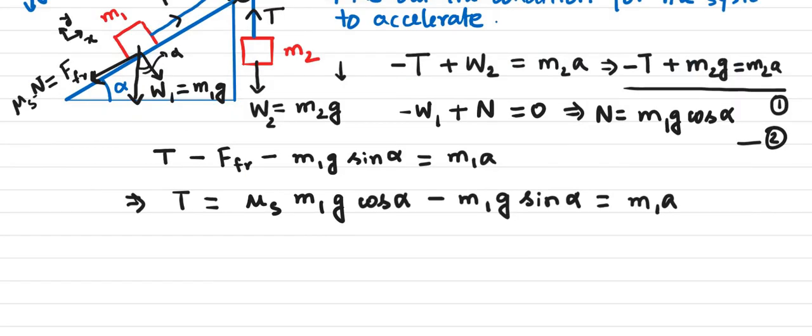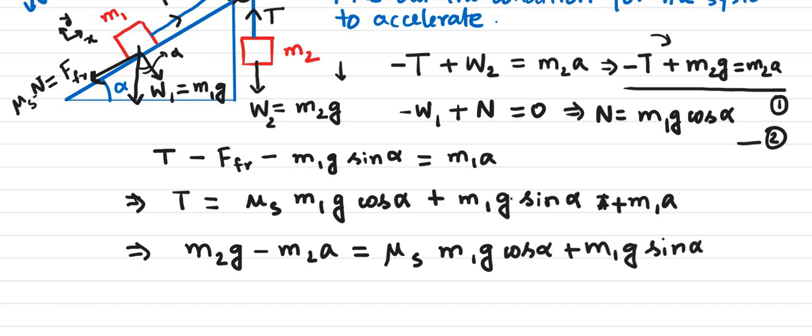I can substitute for T this equation here. T will be equal to M2G minus M2A. So T equals M2G minus M2A equals the whole thing here. I'm sorry, this was going to be a plus, and this is going to be a plus sign, because I've sent everything to the right side. So I have Mu S M1G cosine of alpha plus M1G sine of alpha plus M1A.